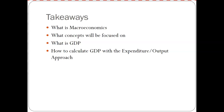Hopefully that helped clarify some things. What we talked about today is, overall, what is macroeconomics — the big picture stuff. The economic indicators we focused on, starting with what is GDP. We also looked at how to calculate GDP with the expenditure or output approach. Later, we're also going to look at the income approach, which is just a different way of checking on that GDP. Until next time, bye.